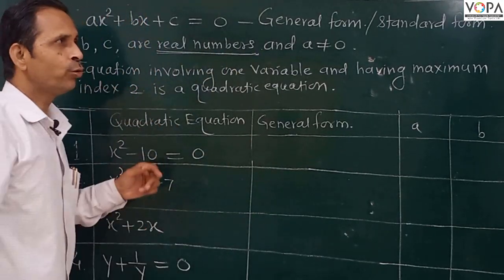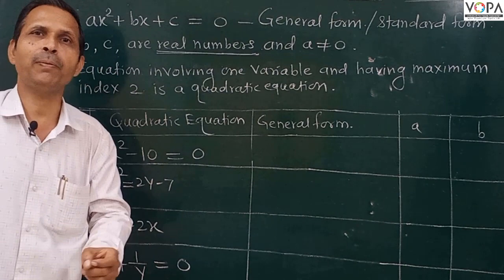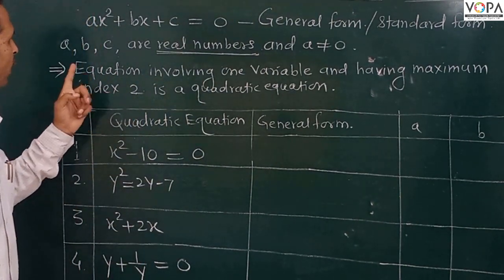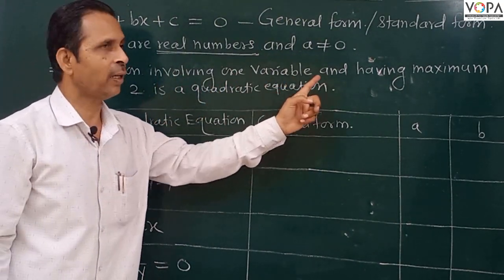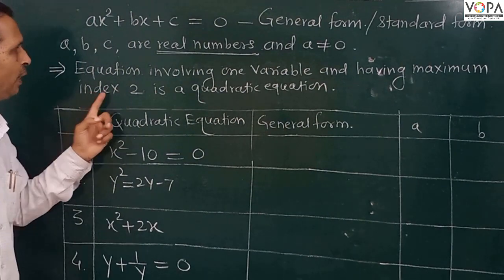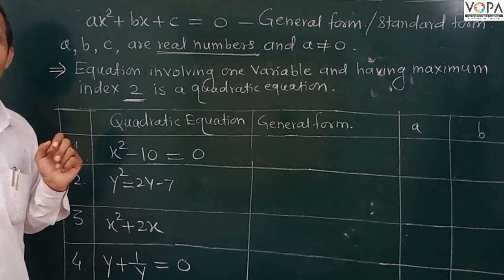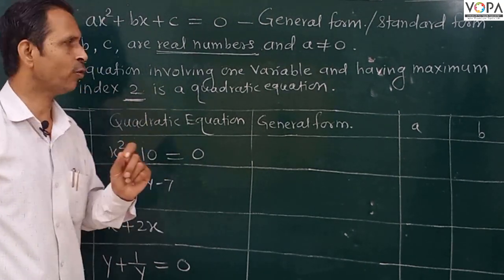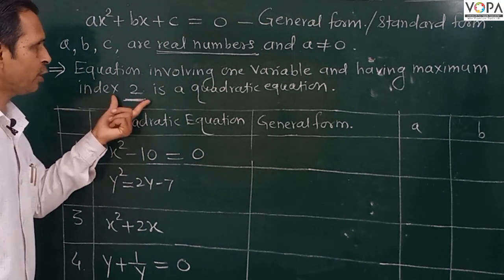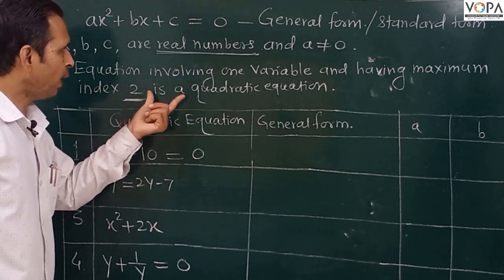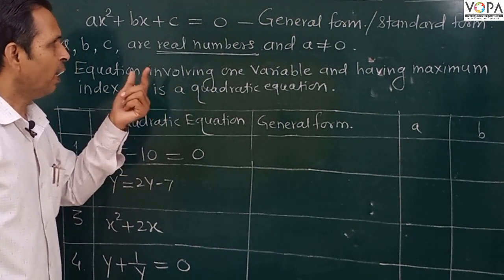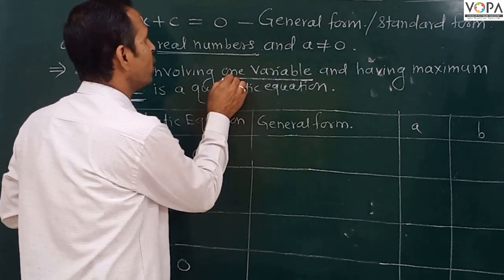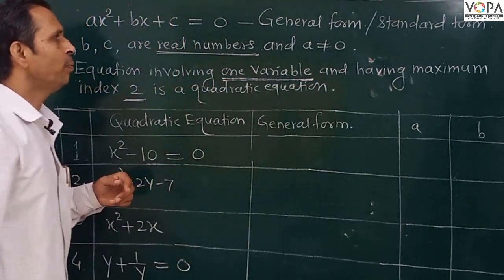Now, when do we say that an equation is a quadratic equation? The first thing is that the equation involves one variable and has a maximum index of 2. This is the first characteristic or first criterion to identify a quadratic equation — the maximum index must be 2.